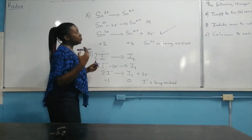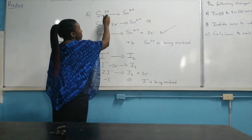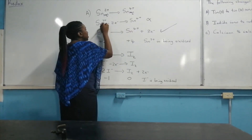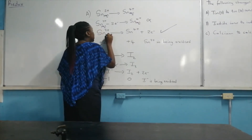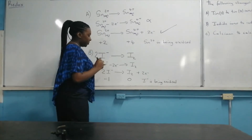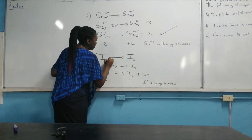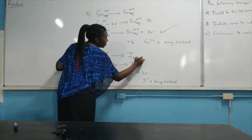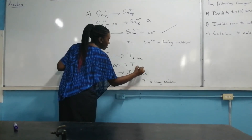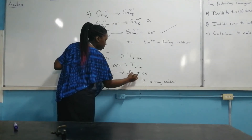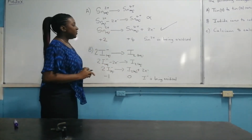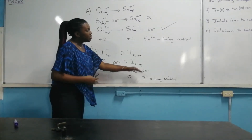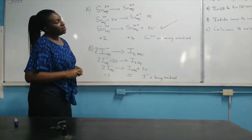Because these are ions, I'm going to assume they represent the aqueous state. So we have Sn²⁺ (aq) and Sn⁴⁺ (aq), putting in the state symbols for all ions. For the iodide ion, we do the same — assuming aqueous — and iodine is also written as aqueous. When writing a full equation or half equation, you're supposed to write the state symbol. This represents an oxidation process, so the electron is added to the right-hand side of the equation.